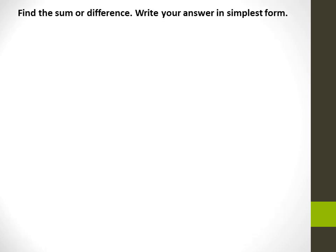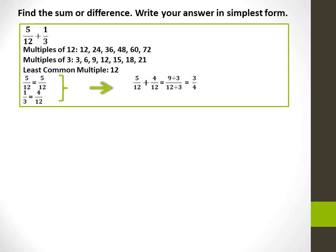Find the sum or difference and write your answer in simplest form. 5 over 12 plus 1 over 3: the least common multiple of 12 and 3 is 12. 5 over 12 remains the same. Multiplying 3 by 4 to get 12, I multiply both numerator and denominator of 1 over 3 by 4 to get 4 over 12. 5 over 12 plus 4 over 12 is equal to 9 over 12. Dividing numerator and denominator by 3 gives the simplest form: 3 over 4.